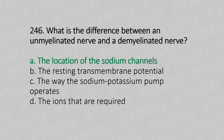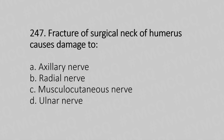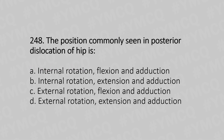Question 247: Fracture of the surgical neck of the humerus causes damage to — Option A: axillary nerve. Option B: radial nerve. Option C: musculocutaneous nerve. Option D: ulnar nerve. The answer is Option A, axillary nerve.